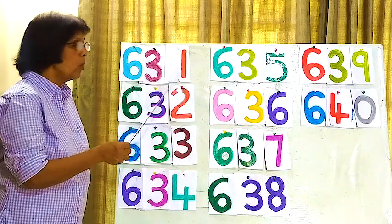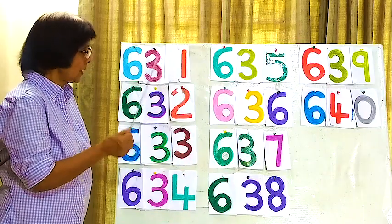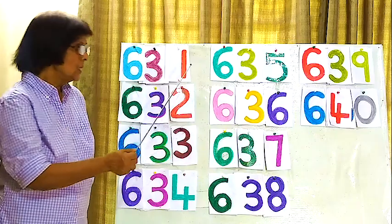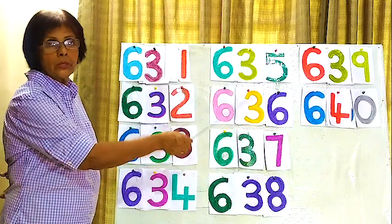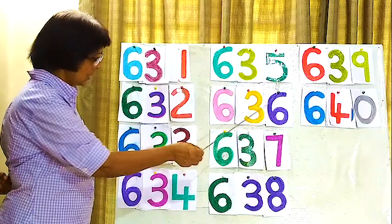631, 631. Now this one, 636. How do you read? 636, 636.